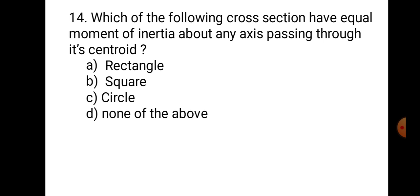Question number 14. This is a bit difficult question. You have to understand which lamina — rectangular, square, or circular — has the same MI about any axis passing through the centroid. For a rectangle, I_XX and I_YY are different. For a square, I_XX and I_YY may be same, but it won't hold for every axis through the centroid. But for a circle, every axis passing through the centroid is a diameter, and the MI about every diameter is equal. Therefore, the answer is circle. Hence, the correct answer is C. Circle.